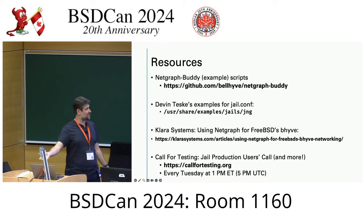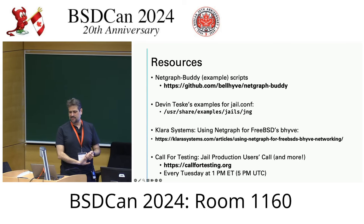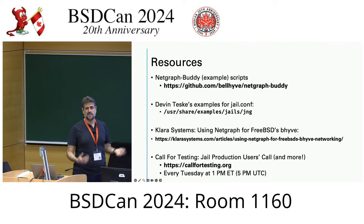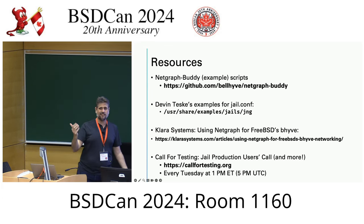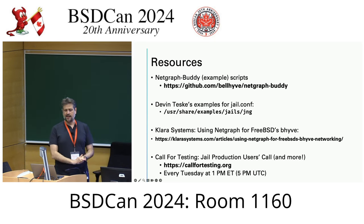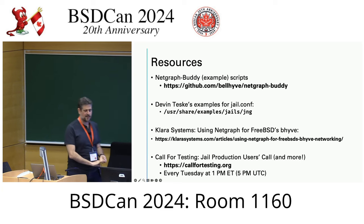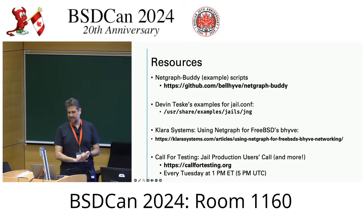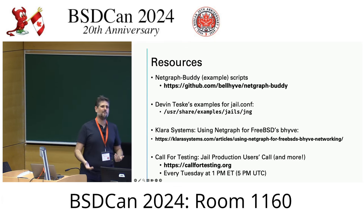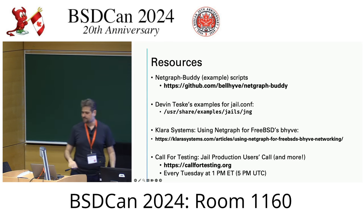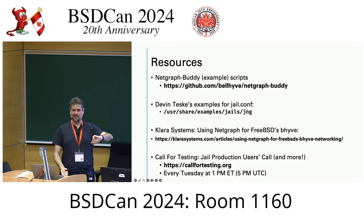Some resources if you want to give this a try: you can look at my RC script and the stat viewer to help get started. In /usr/share/examples there are some jail scripts that will create the NetGraph devices and bridges you need — just pop that script inside your jail.conf. Claire Systems has a great article that was inspiration for some of this work. If you want to discuss further, come to the call for testing every Tuesday at 5 PM UTC — we talk about jails and pushing performance and features to the max.